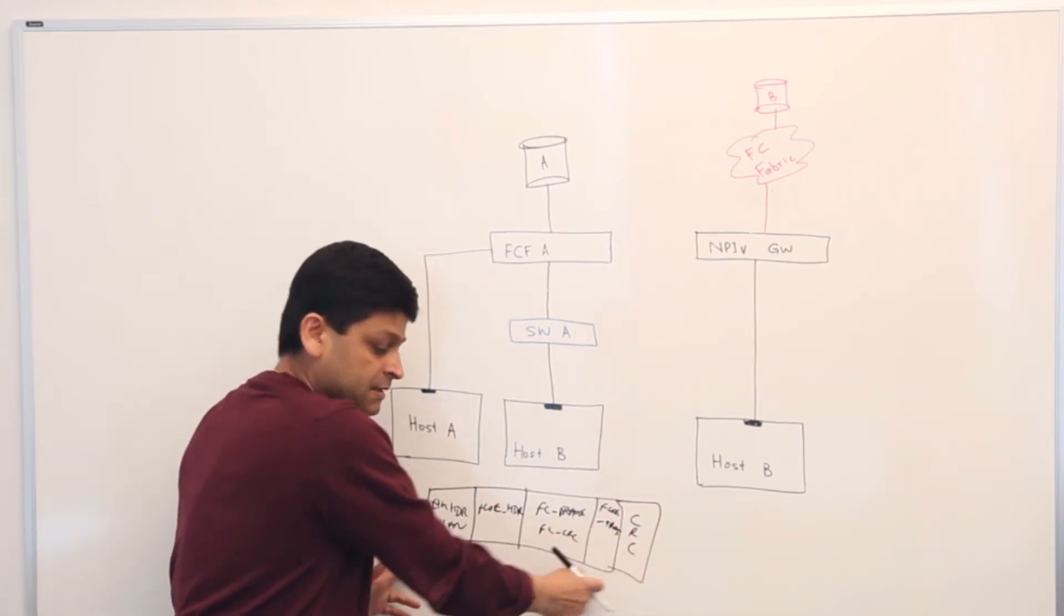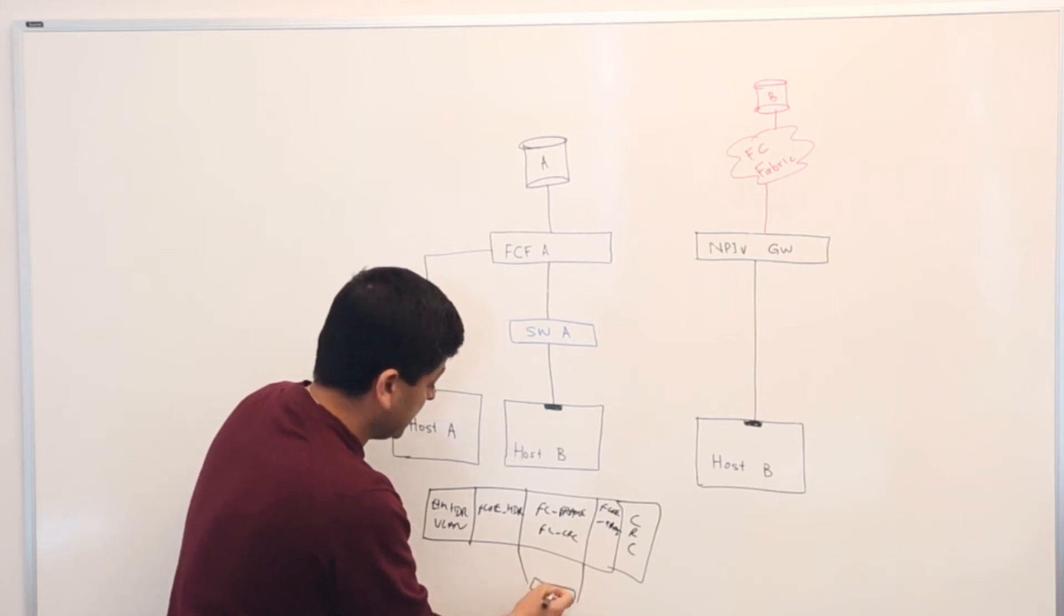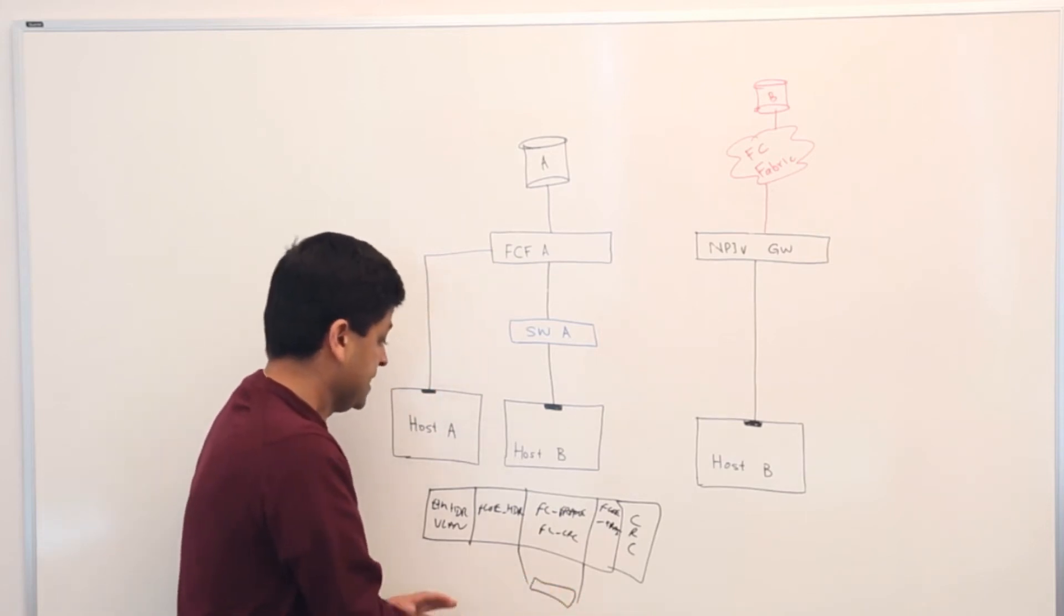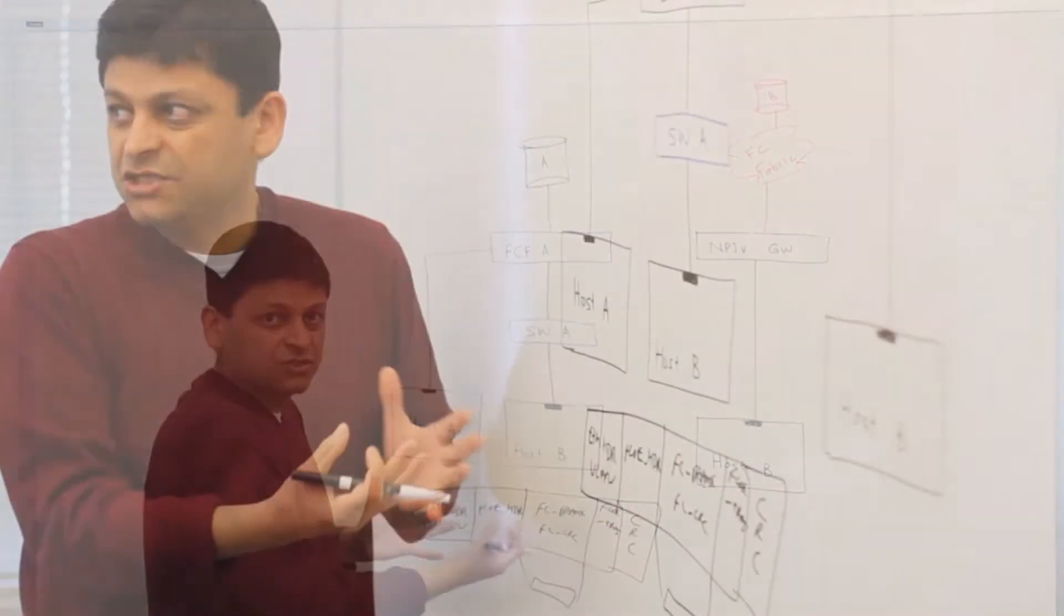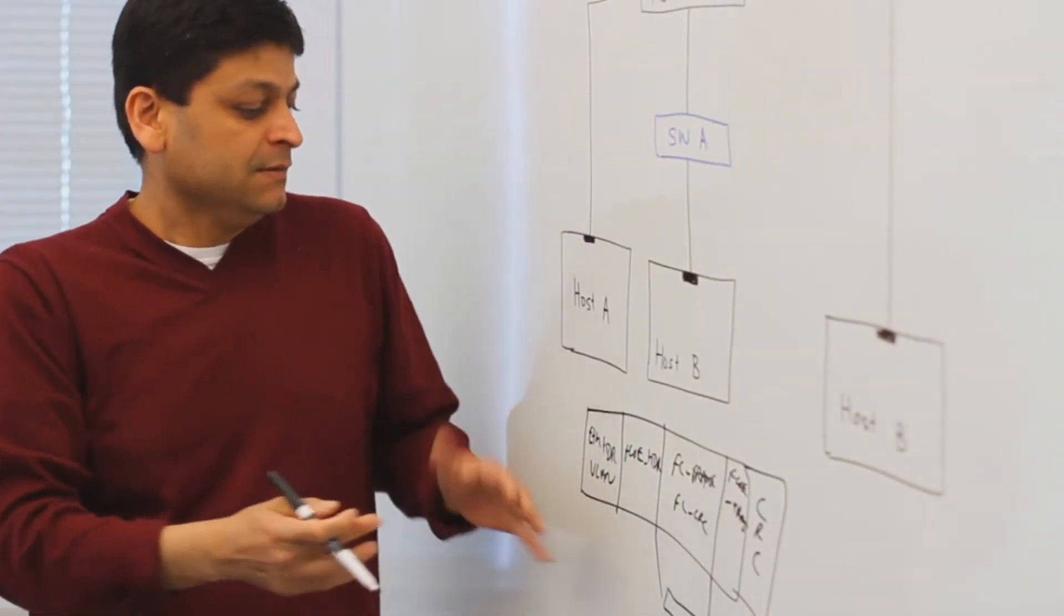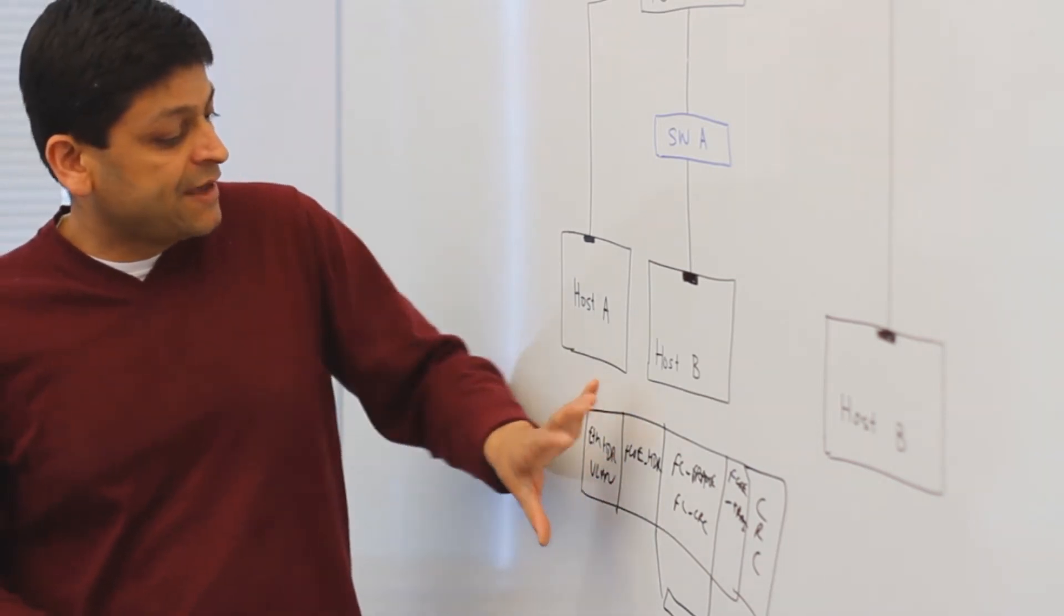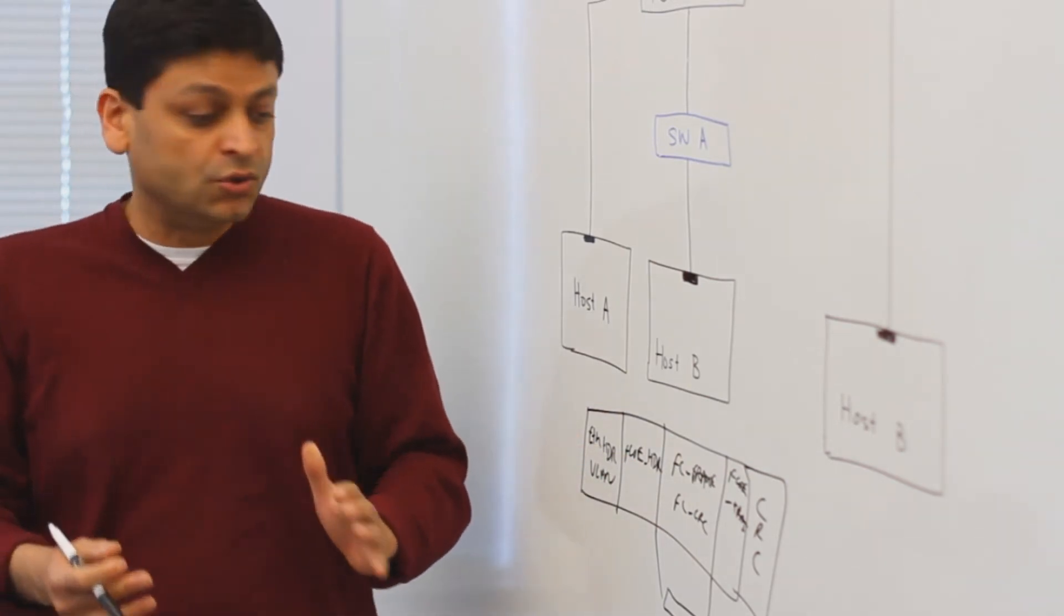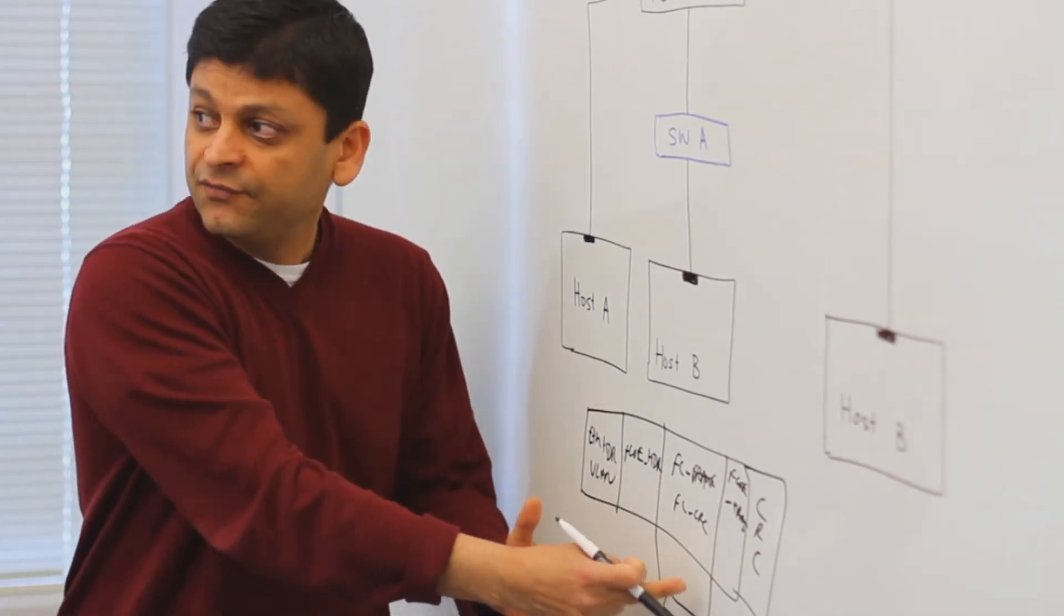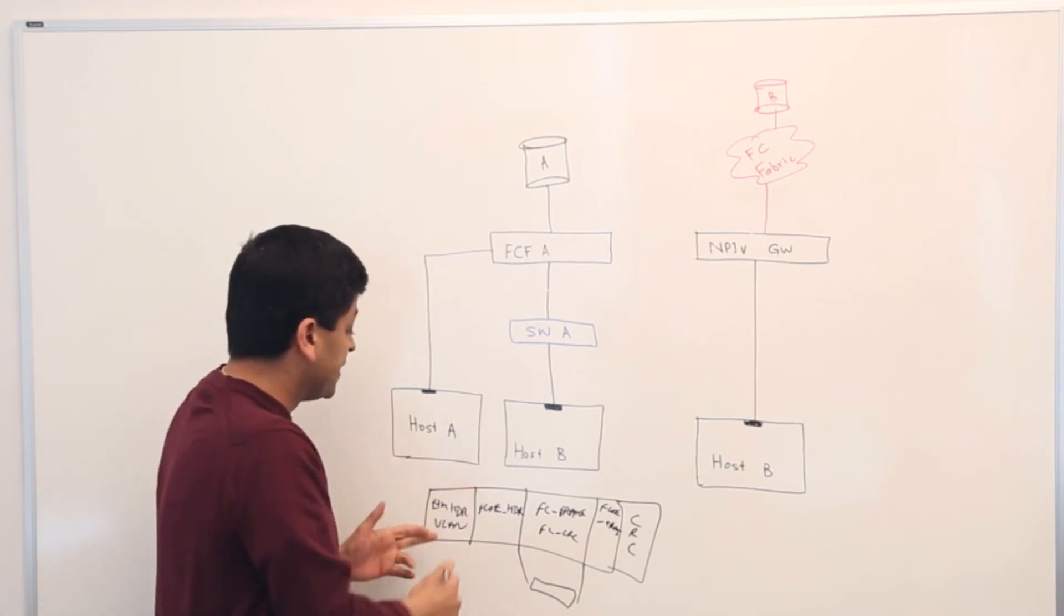So again, this is an Ethernet frame that contains the original FC frame. And this would be about 2200, 2300 byte packet. So the way FCoE frames are defined is the FC frame is never chopped into two. The full FC frame would be embedded into an Ethernet frame.